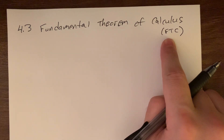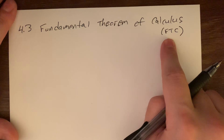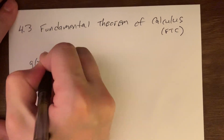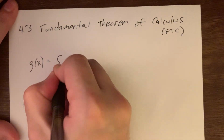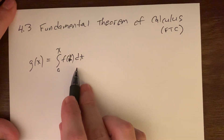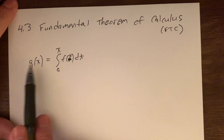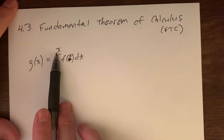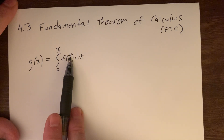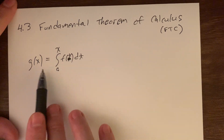There are two parts to this, and we have to start with the ideas before we can get to the first part. At the very beginning of this section, we define a new function g of x, defined as the definite integral of another function. I'm using x as the variable for g, and that x is one of the bounds, so I can't use x inside — that's why I made that a t. So I have the integral of f of t dt. It's just to have a different variable.